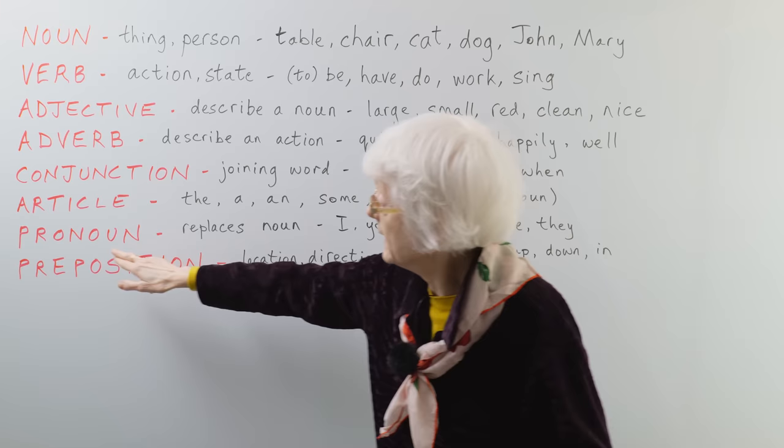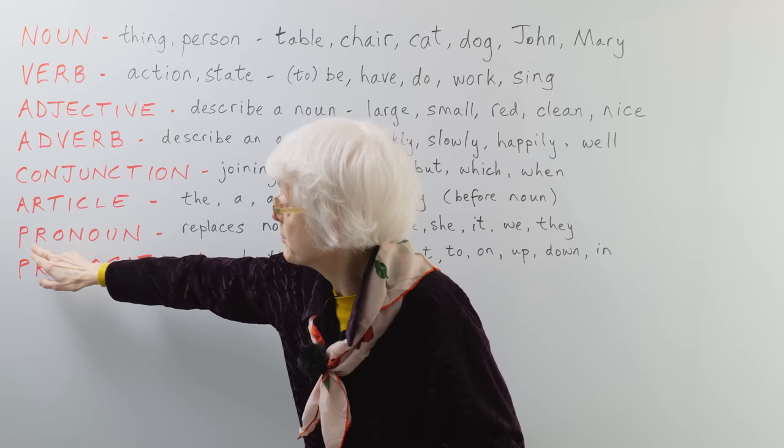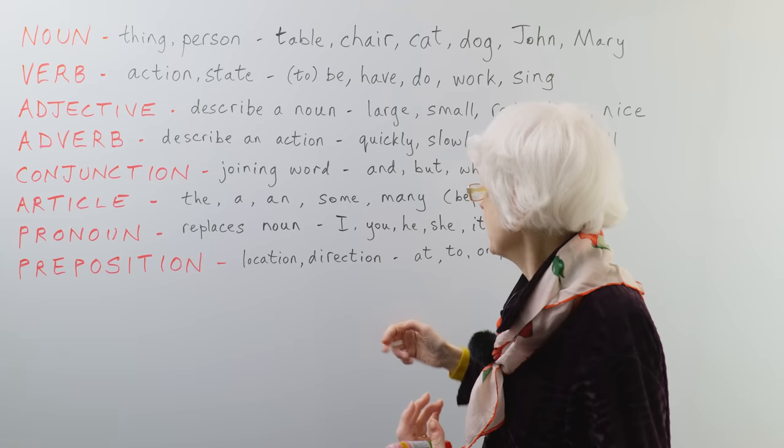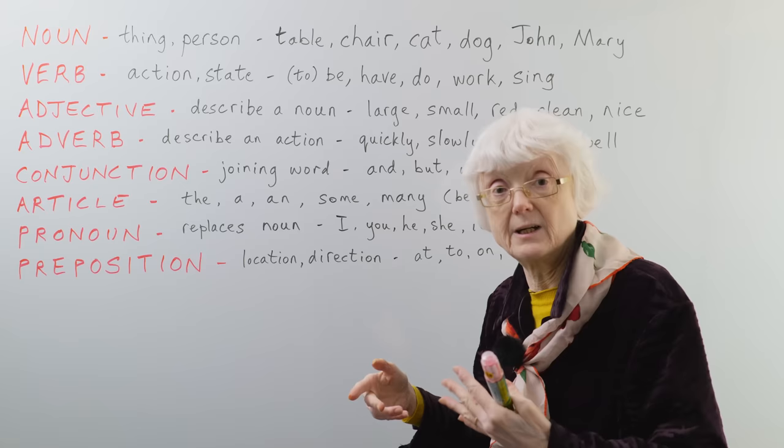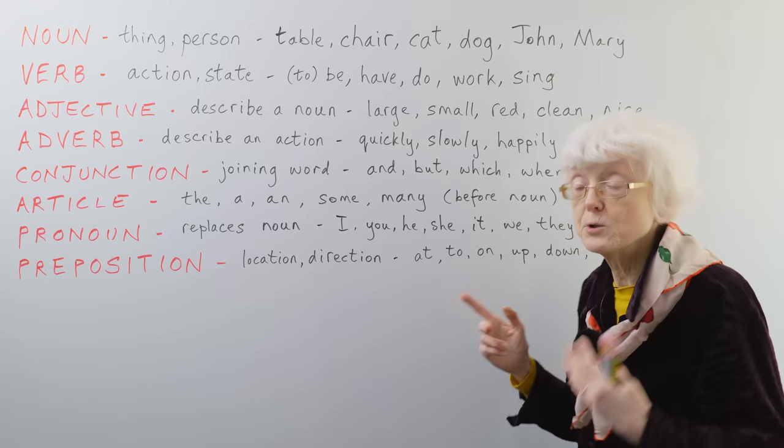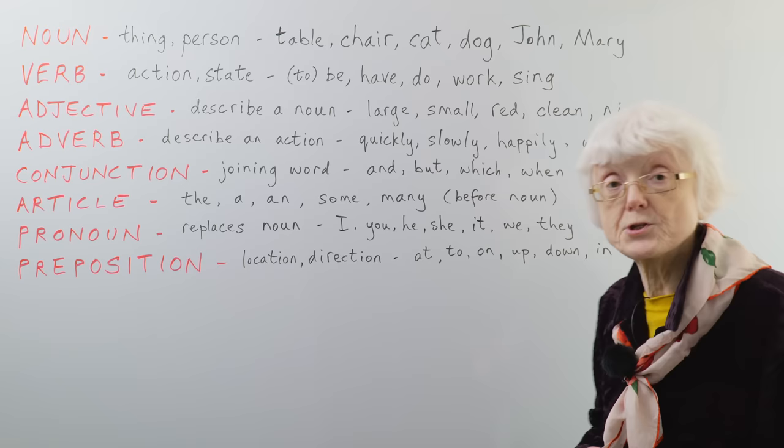Then a pronoun. We've got the word noun here and pro in front of it. A pronoun replaces a noun. It saves you having to give the noun. I, rather than my name, it's I, and you, rather than John, you, and he, she, it, we, they. Those are called personal pronouns, all to do with people or things.